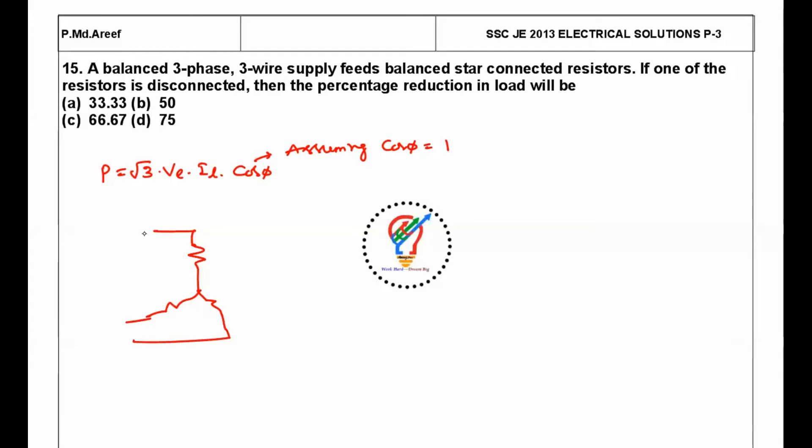What is the phase current? I phase is nothing but V phase by R. Now what is the relationship between the phase voltage and line voltage in star connection system? VL is equal to root 3 into V phase. So V phase is equal to VL by root 3. So I phase is equal to VL by root 3 into R.